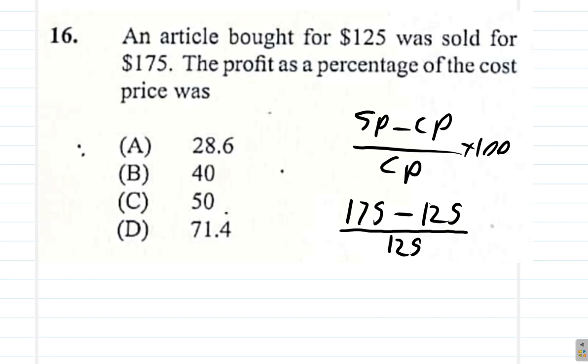Now here, this would be 50 divided by 125. Let's cancel out: 5 into 50 is 10, divided by 5 into 125 is going to be 25. So 10 over 25 times 100. That's 10 over 25 which is 4 times 10, so 40.